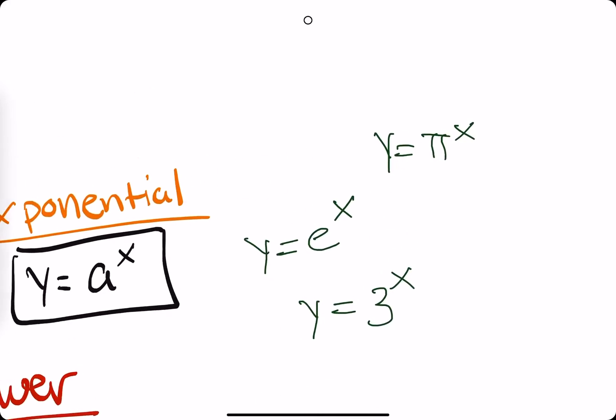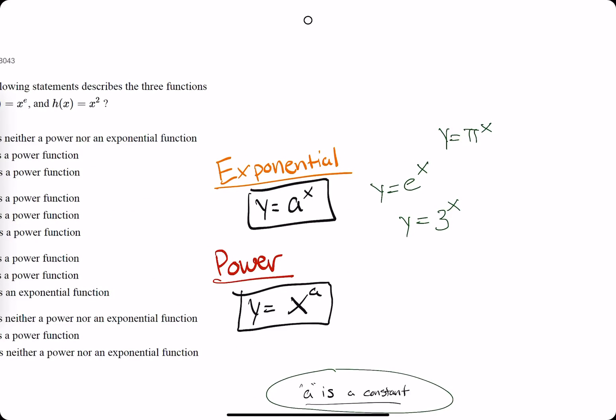How does it look like it's bleeding like that? There we go. So pi, e, 3, all numbers, all raised to the x. These are all exponential functions.